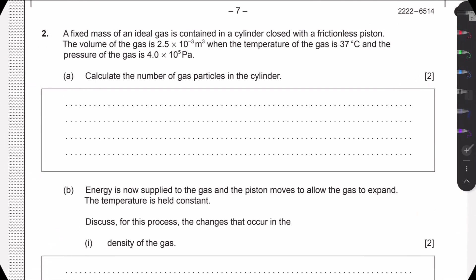Hello guys, welcome to this new video. We're going to go through question 2 in the May 22, timezone 2, paper 2. Here we're given an ideal gas in a container with a frictionless piston. We're given the volume, temperature, and pressure, and we first need to calculate the number of gas particles in the cylinder.